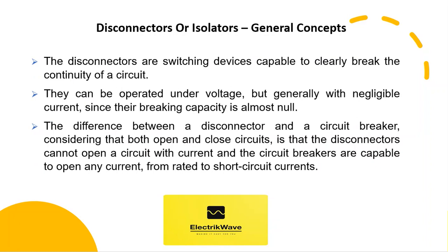Let's see the general concept about Disconnectors. Disconnectors are switching devices capable of clearly breaking the continuity of a circuit. They can be operated under voltage, but generally with negligible current, since their breaking capacity is almost null. The difference between a Disconnector and a Circuit Breaker is that Disconnectors cannot open a circuit with current, while Circuit Breakers are capable of opening any current, from rated to short circuit currents.